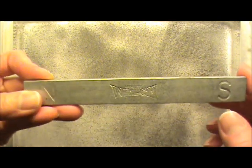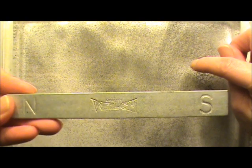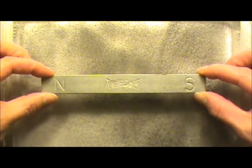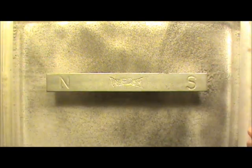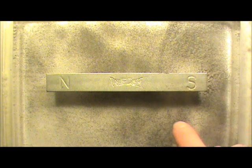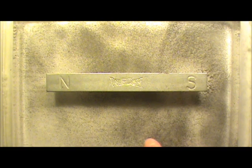Here I have a bar magnet and some iron filings suspended in oil. I am going to put this magnet down. Now we can see that the iron filings line up with the magnetic field lines.